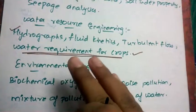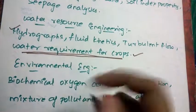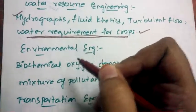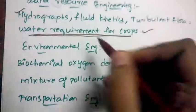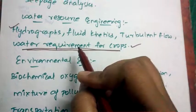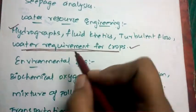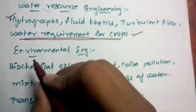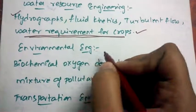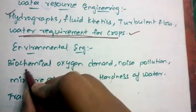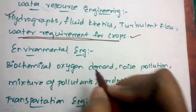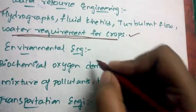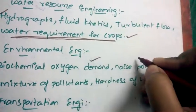Sometimes the questions from this topic will be very time-consuming, so prepare well for water requirement for crops. Coming to environmental engineering: biochemical oxygen demand and noise pollution — both are very important topics — along with mixture of pollutants and hardness of water.